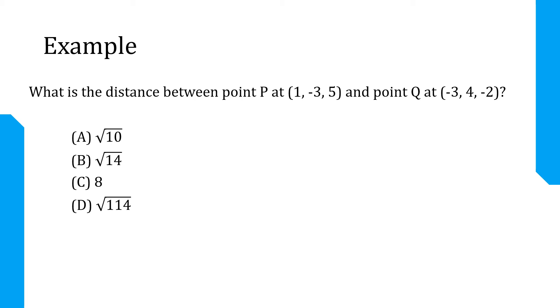For starters, let's write down our knowns. At point P we're given the coordinate system in three dimensions which is (1, -3, 5), so let's break it down on what X1, Y1, and Z1 equals. Let's do the same thing for point Q with that being (-3, 4, -2).